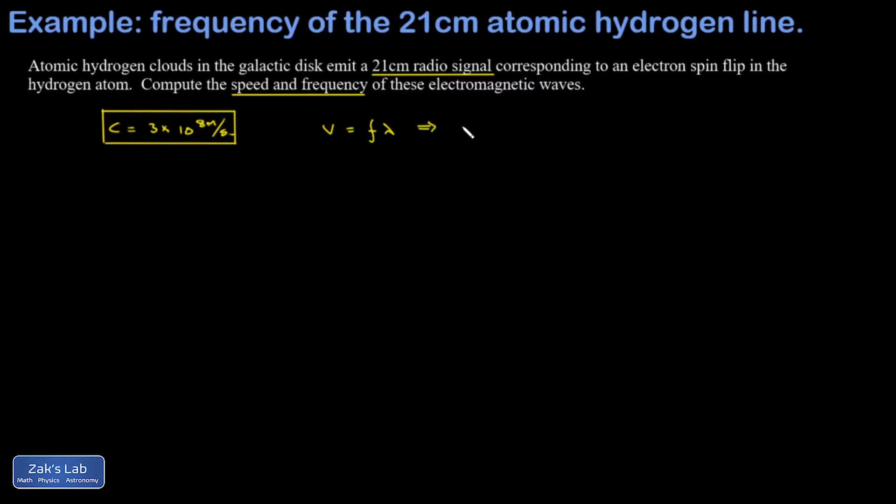If our electromagnetic waves are moving at the speed of light, I can write c = fλ. For this problem, I'm given the wavelength as 21 centimeters and asked to solve for the frequency.